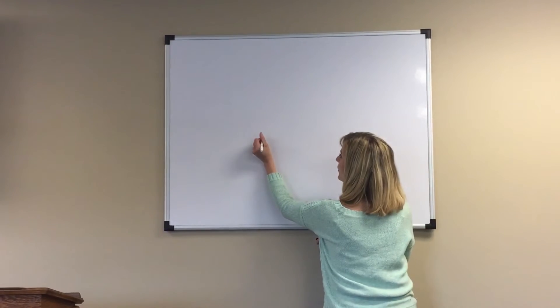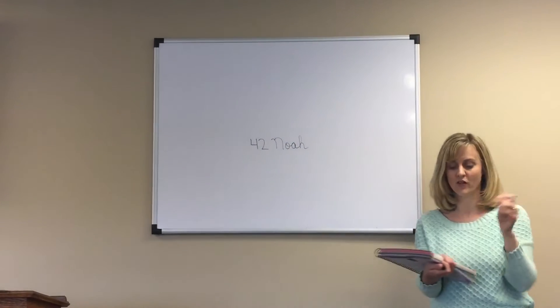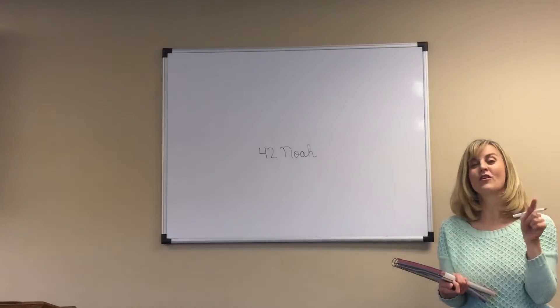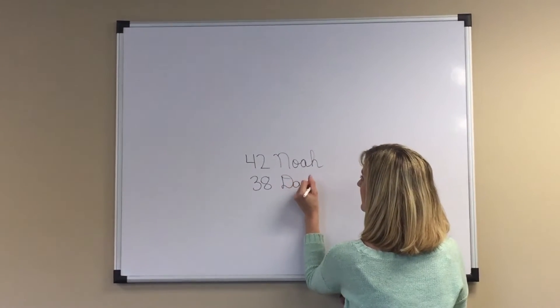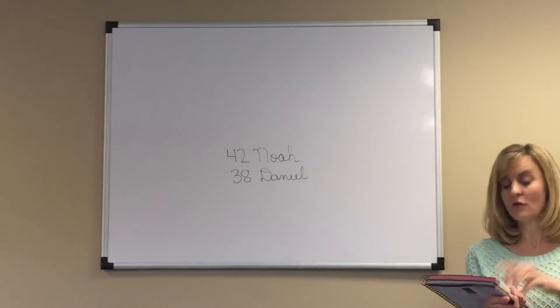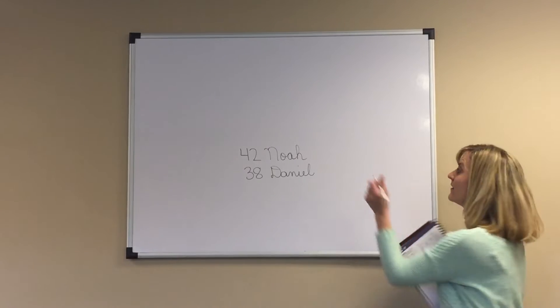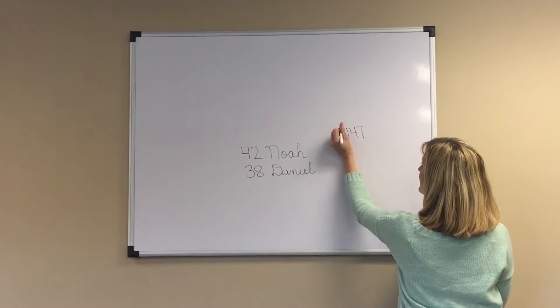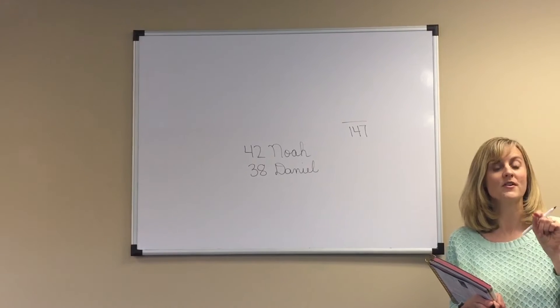Noah and his brothers Daniel and Matthew own 147 books. 42 of the books belong to Noah. As I always tell you, label whose books they are to help you keep track. 42 belong to Noah, 38 of the books belong to Daniel. Now how many brothers are there? Look and see — there are three. They are asking you how many books does Matthew own. You don't know how many books Matthew owns, but you do know that the total number of books is 147. This is the total.